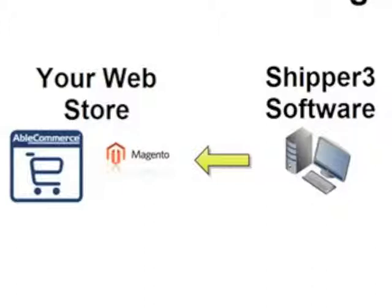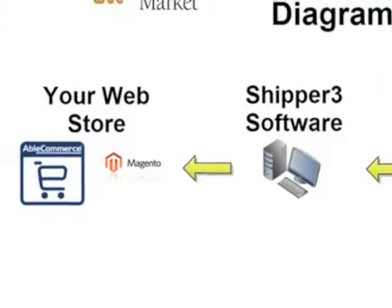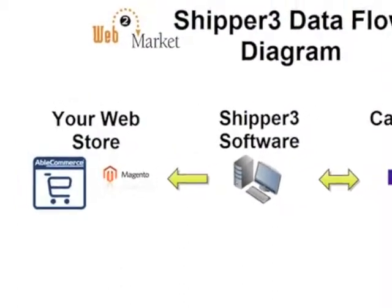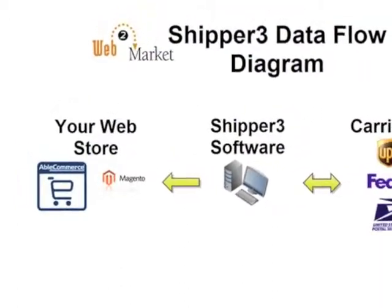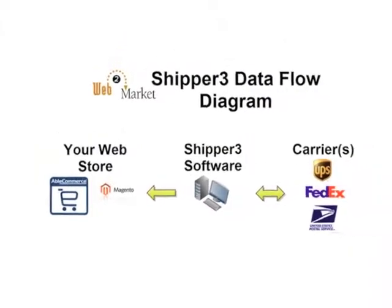Shipper also updates the order status in your web store. Now your customer can return to the site, check their order status, see that it's been shipped, and do shipment tracking on your store. If you configure it properly, you can also have your web store automatically send out an email notifying your customer that the shipment has been generated.